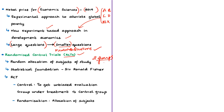RCT helps formulate interventions required to achieve desirable outcomes. The article mentions the evolution of RCT — instances can be traced back to the 16th century. However, the statistical foundation of RCT was developed about 100 years ago by the British statistician Sir Ronald Fisher.